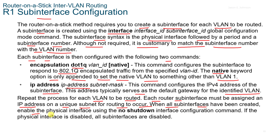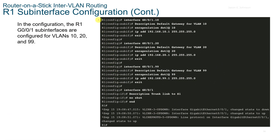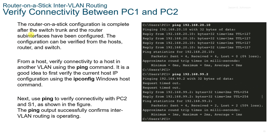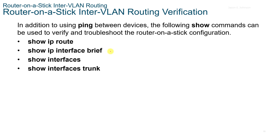If the physical interface is disabled, all sub-interfaces are disabled. After the switch trunk and router sub-interfaces have been configured, the Router on a Stick configuration is complete. You can verify connectivity between PC1 and PC2 using the ping command from a host, and use IP config to verify the host's local IP address. For Router on a Stick inter-VLAN routing verification, you can use the show IP route, show IP interface brief, show interfaces, or show interfaces trunk commands.